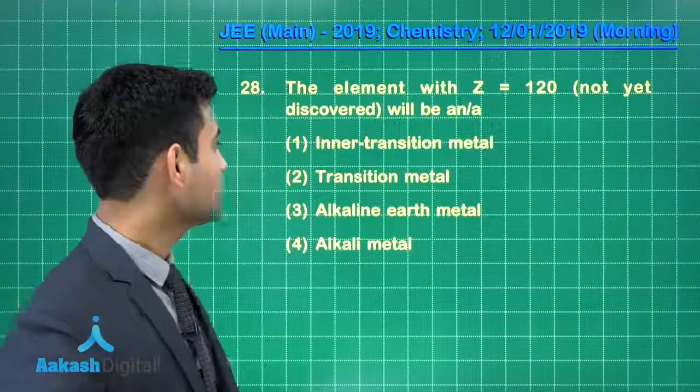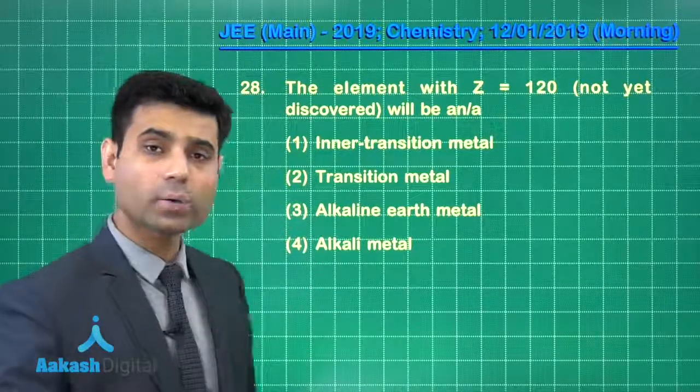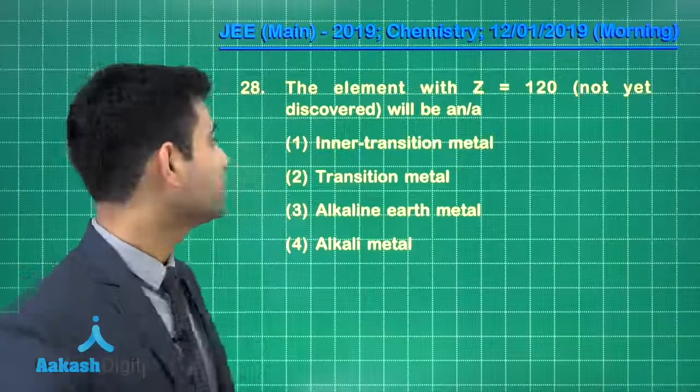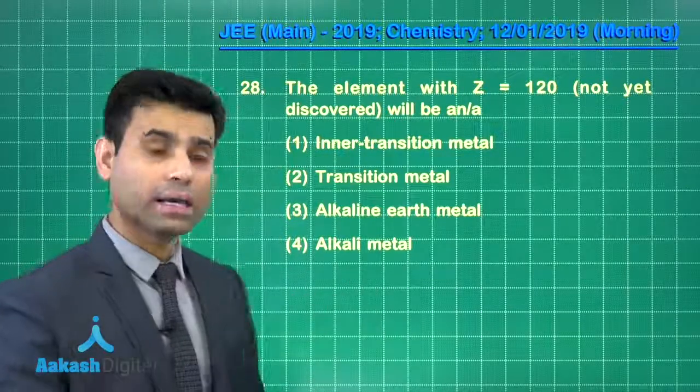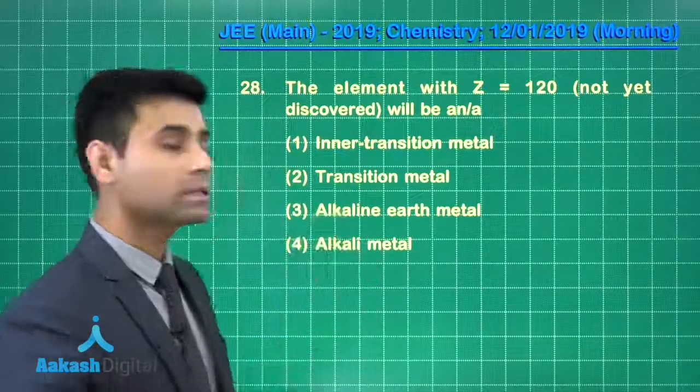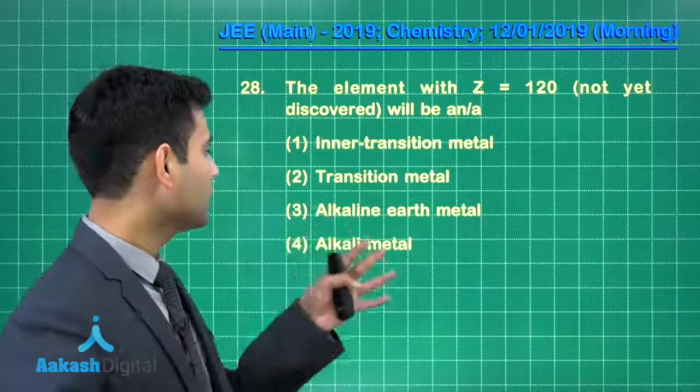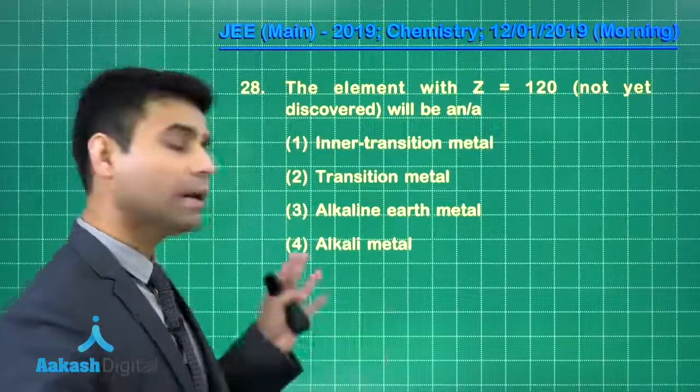This is the next question we have which says the element with Z equal to 120, not yet discovered, will be an or a. Options are inner transition metal, transition metal, alkaline earth metal, or alkali metal.